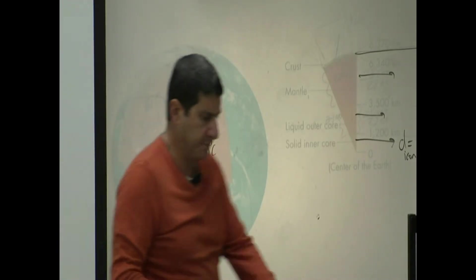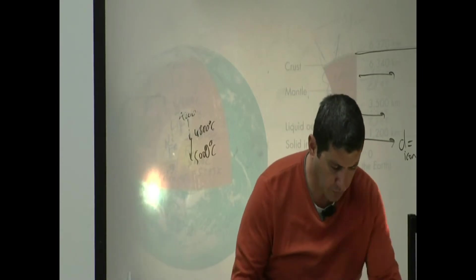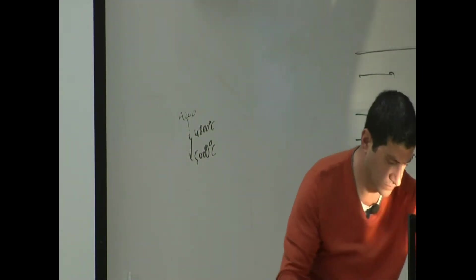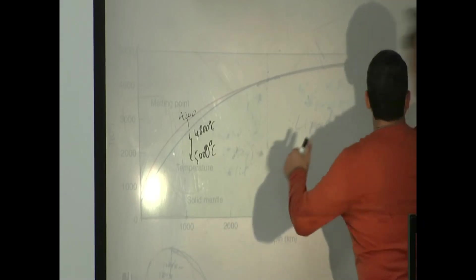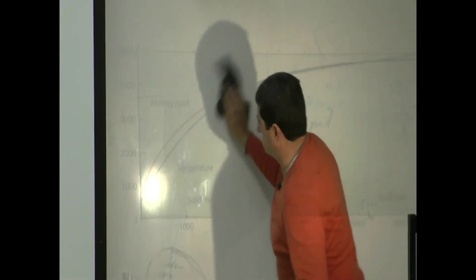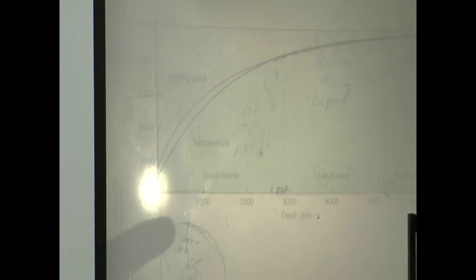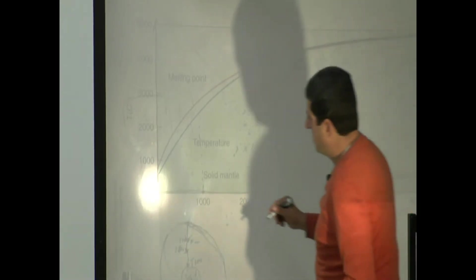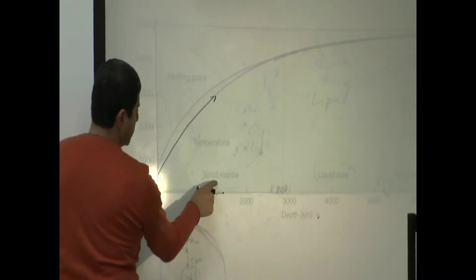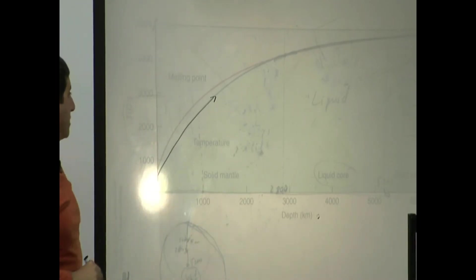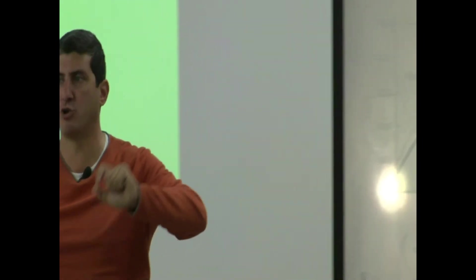To understand that, we can show a chart like this. This chart shows you the temperature of the Earth as you go inside as a function of depth. The temperature of the Earth, this blue line, is increasing. You're in the mantle. However, even though the temperature is increasing, the melting point of the material in the mantle is also increasing.